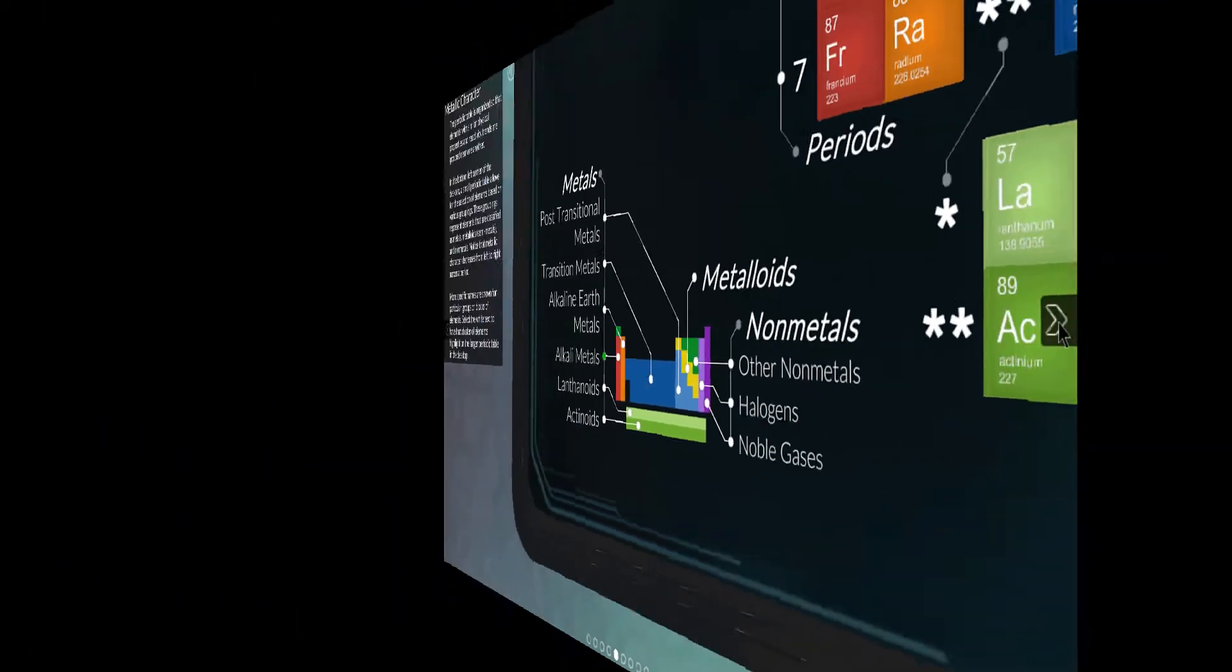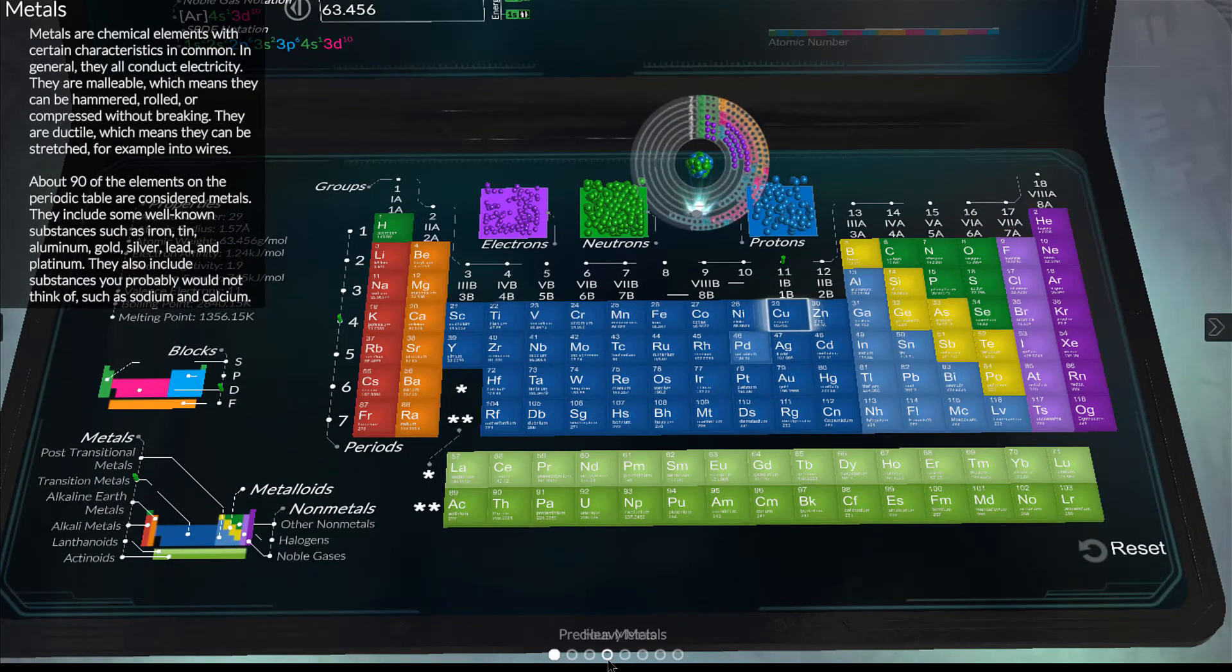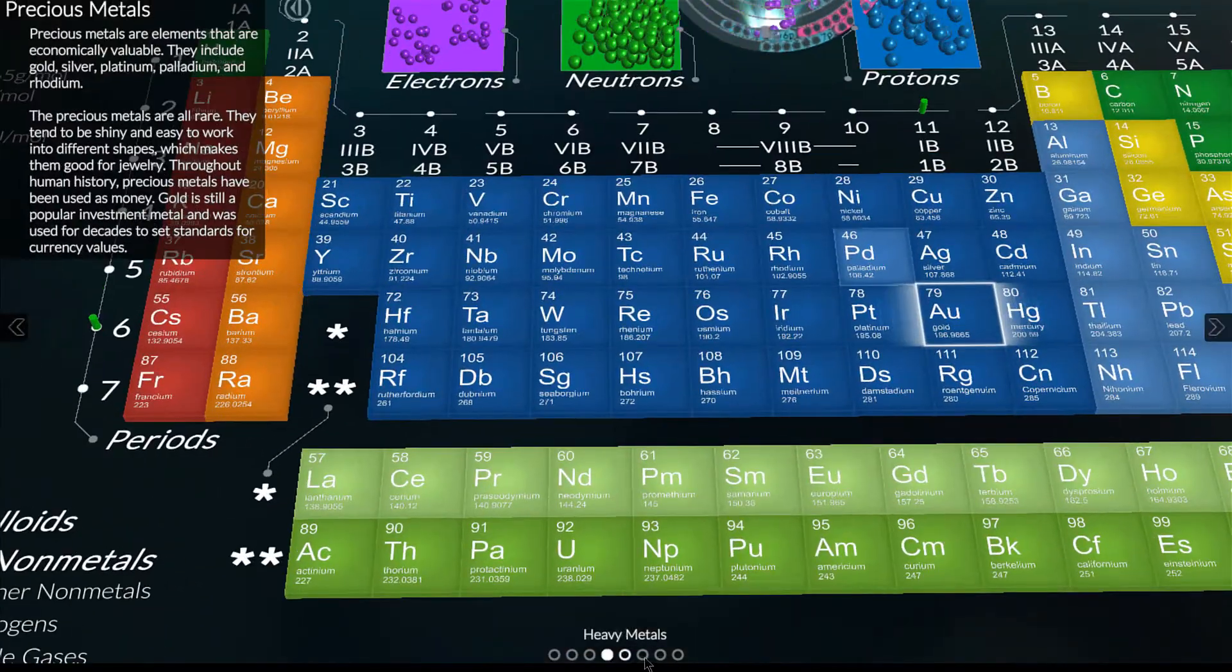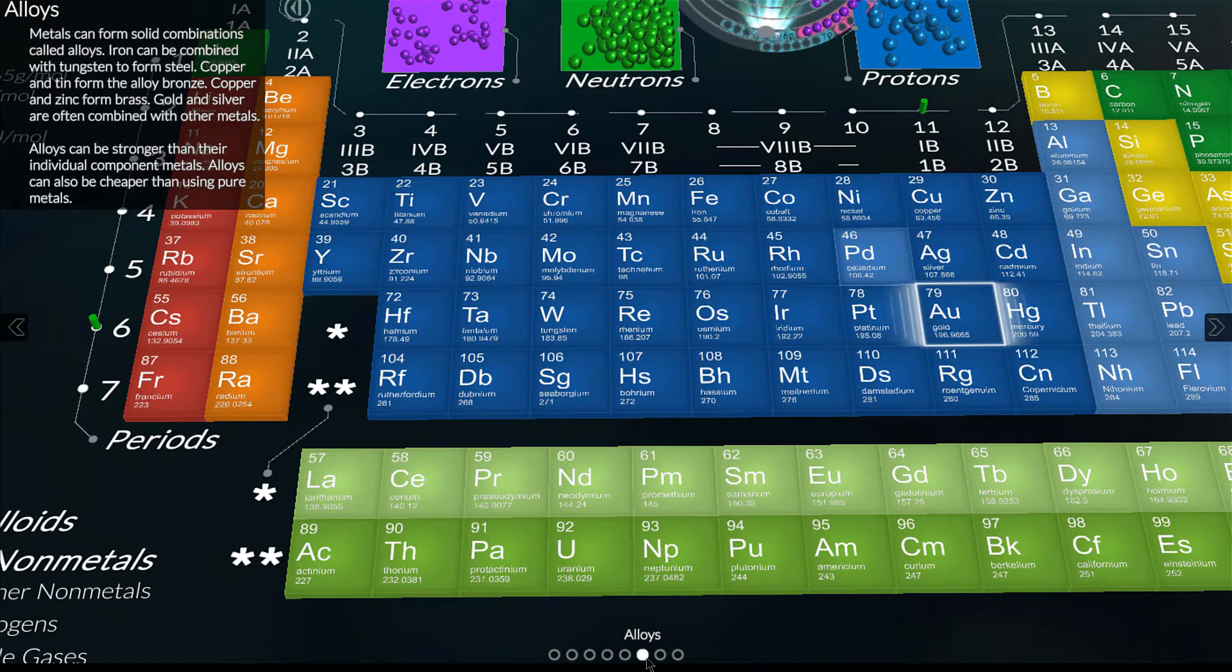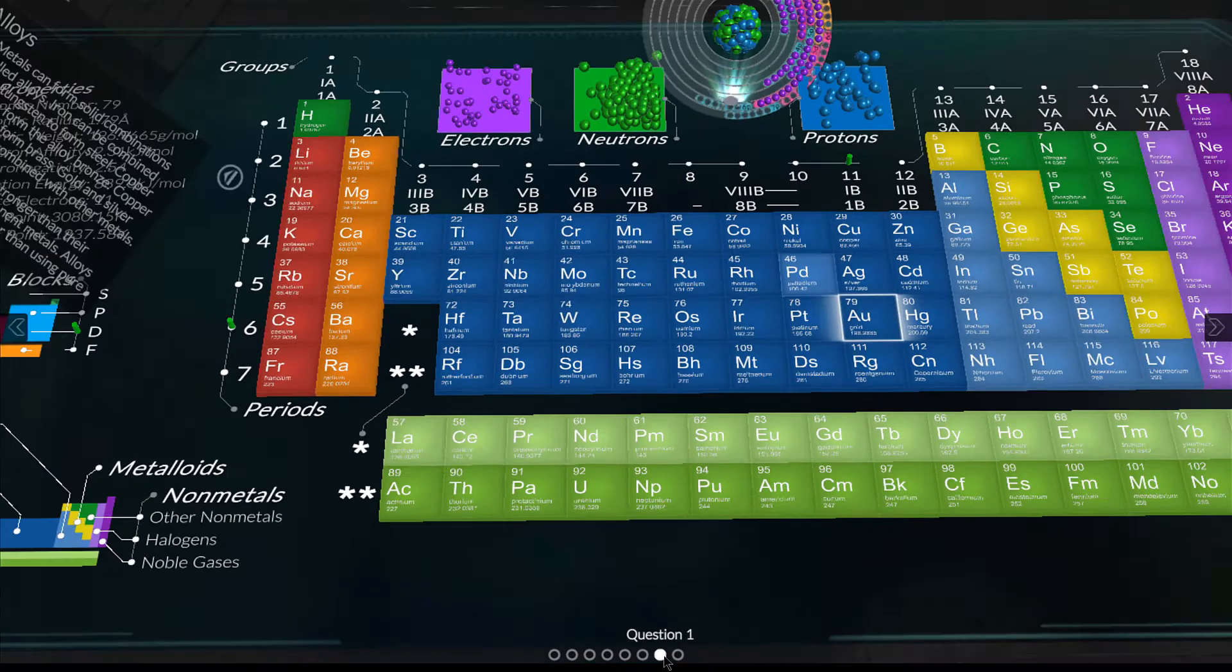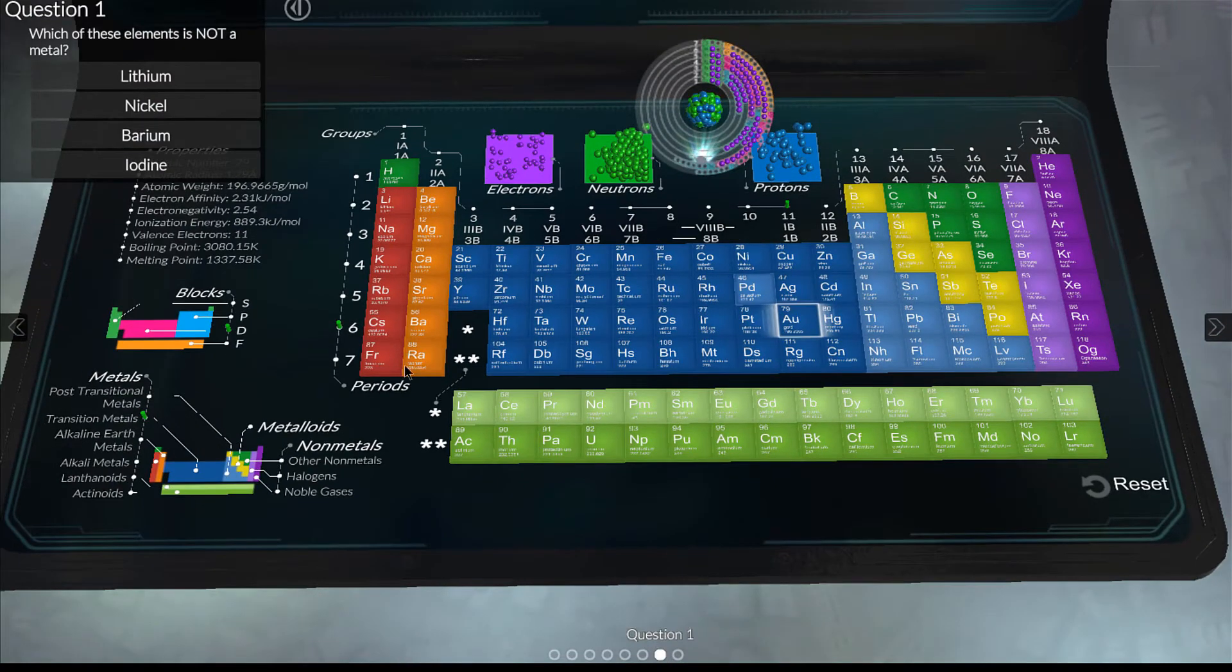For example, if the metals activity is chosen, the periodic table tool will introduce the user to the concept of metal elements through various scenes and test the user's knowledge with questions.